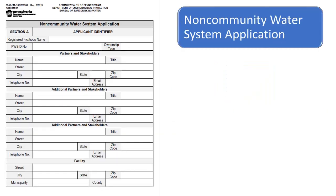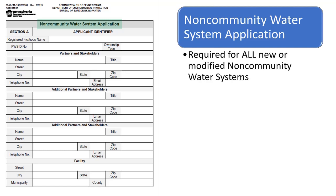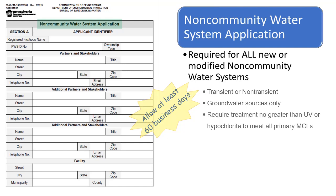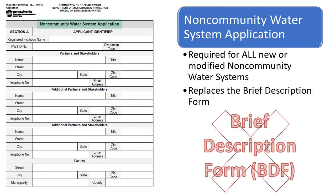The non-community water system application is required for new or modified non-community water systems, both transient and non-transient, that have groundwater sources and require treatment no greater than ultraviolet light or hypochlorite disinfection to meet all primary MCLs. Applicants should allow at least 60 business days from the department's acceptance of an administratively complete application prior to planned construction or modification. The non-community water system approval is replacing the brief description form that was previously used for modifications or construction of a non-community water system.